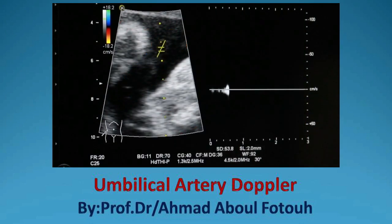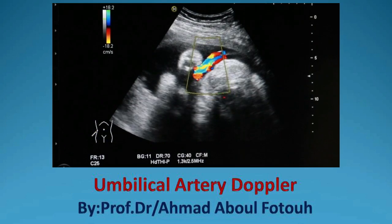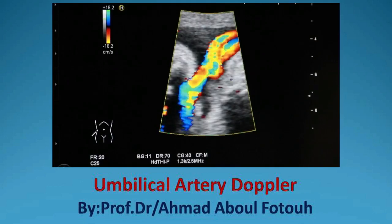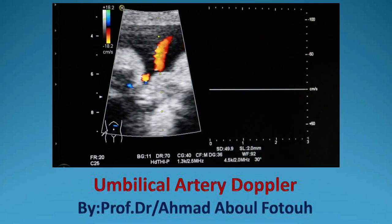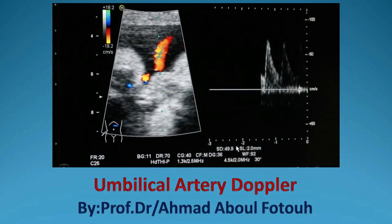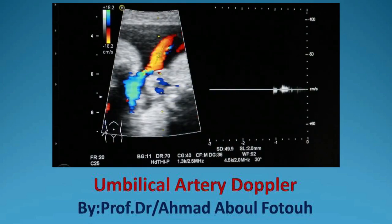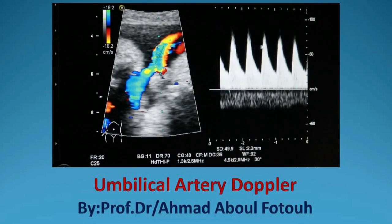This is the way to pick the umbilical artery through the cord at a good, reasonable angle. The key issue is to make a good angle between the incident beam and the portion of the vessel you are measuring, so that you can obtain a very good spectrum. Look at the spectral curve — it is very good.